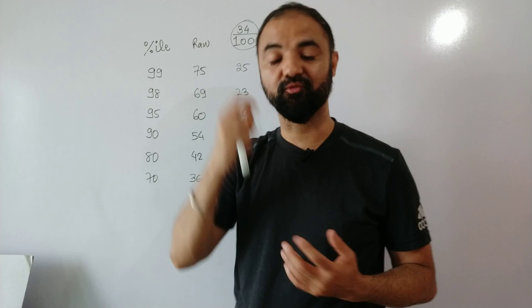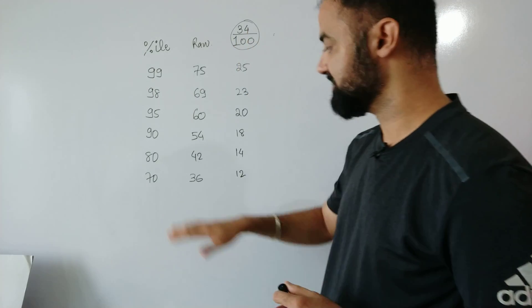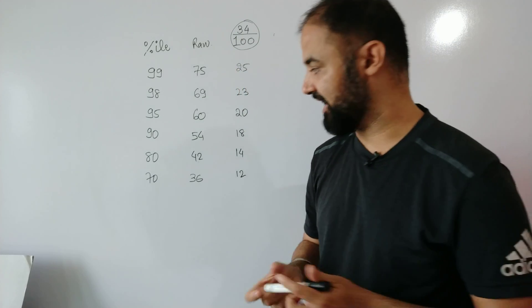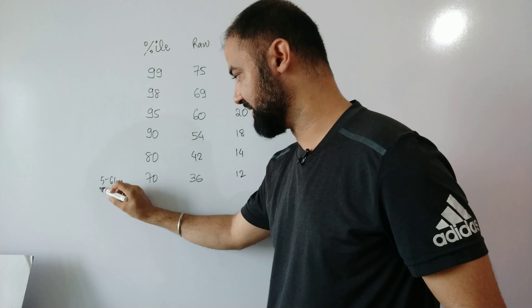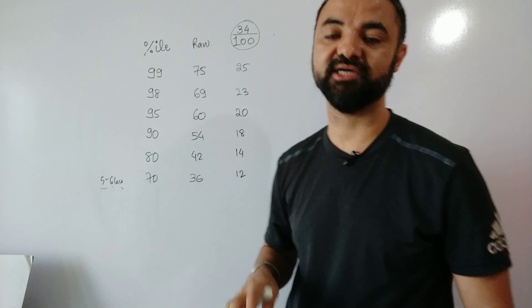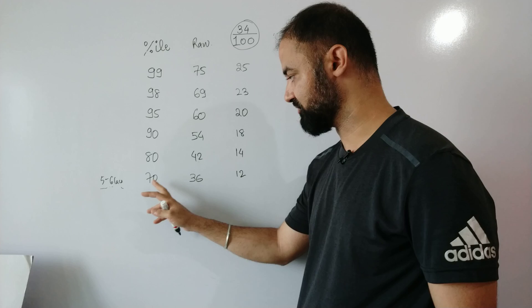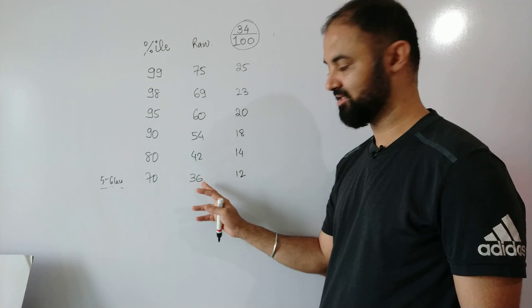70 percentile is where the action starts. You'll get a decent college with average salary around 5 to 6 lakhs. So those who want to end up in a decent college, 70 percentile plus is considered to be a decent score. You will get a decent college. 70 percentile raw score this year was around 36 marks.